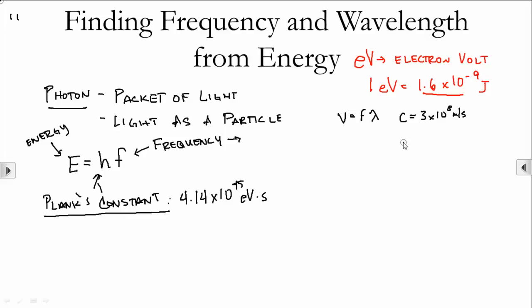Radio waves, microwaves, infrared light, red light, orange light, yellow light, green light, blue light, indigo light, and violet light — moving on into ultraviolet, into x-rays, into gamma rays. All of that light moves at 3 times 10 to the eighth meters per second. So if we plug these things into our Planck's constant equation, the energy of a given photon of light is going to be Planck's constant times the speed of light divided by that wavelength of light.